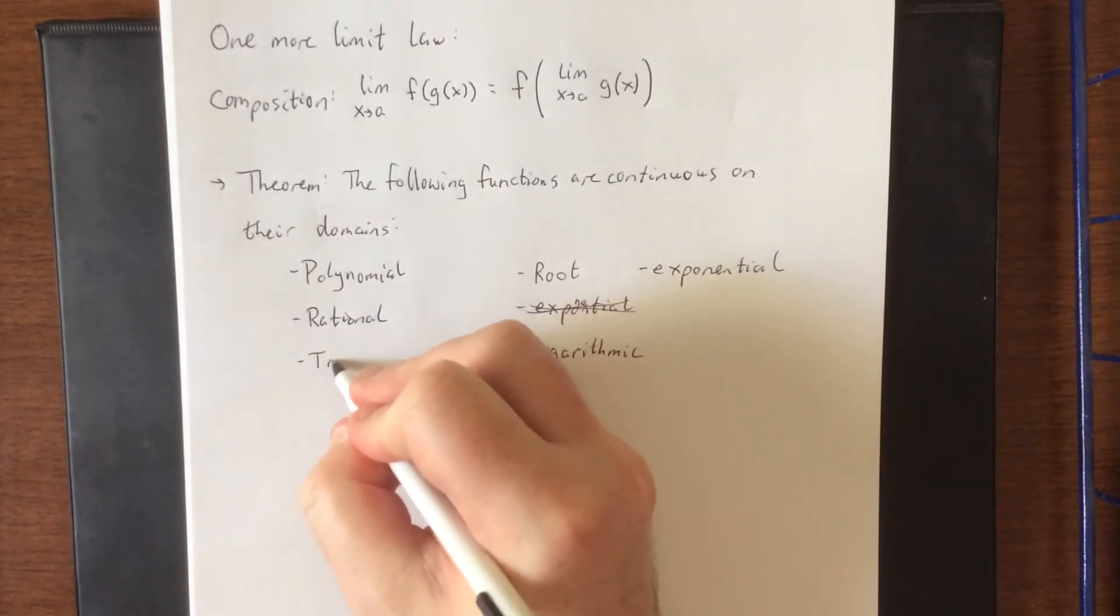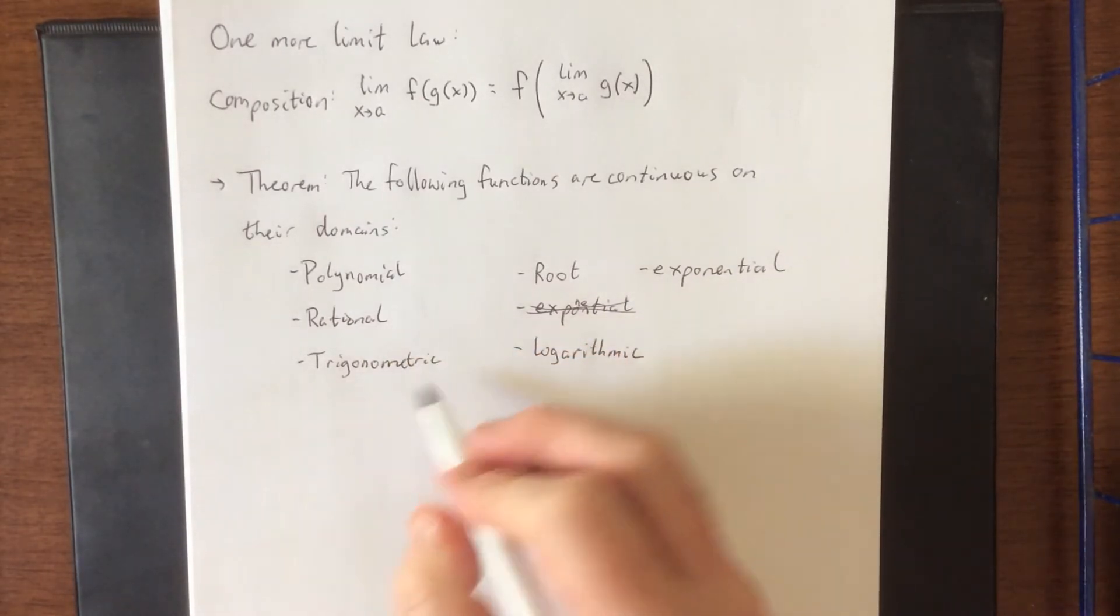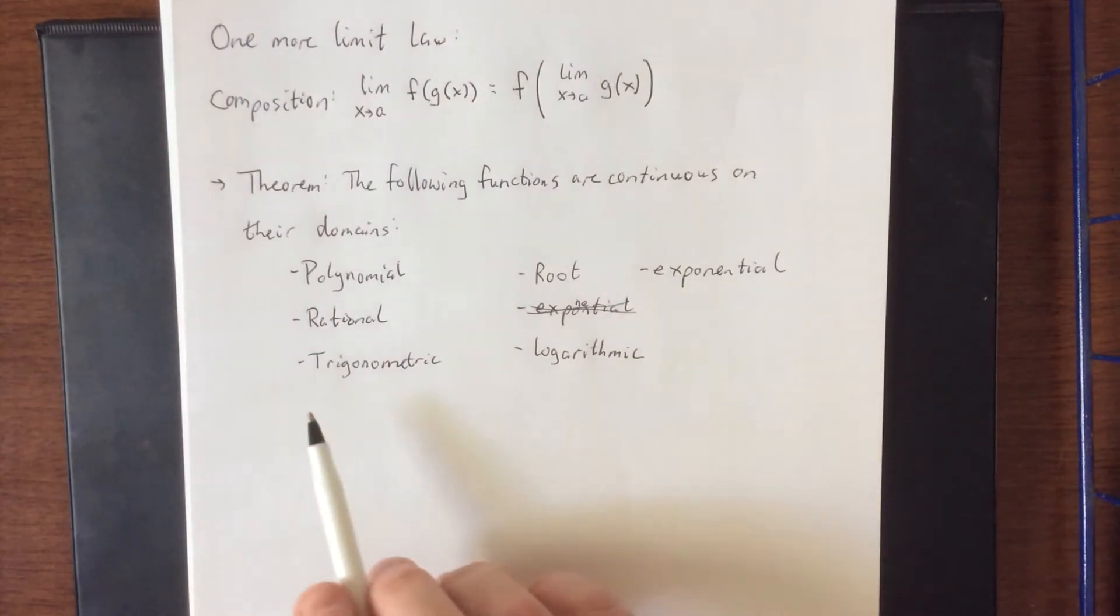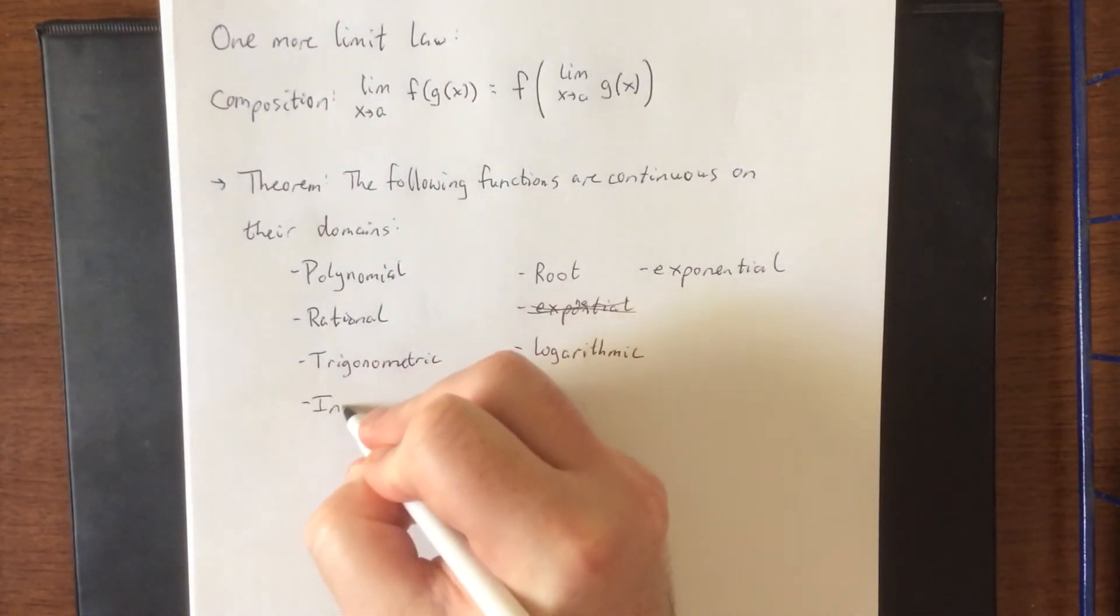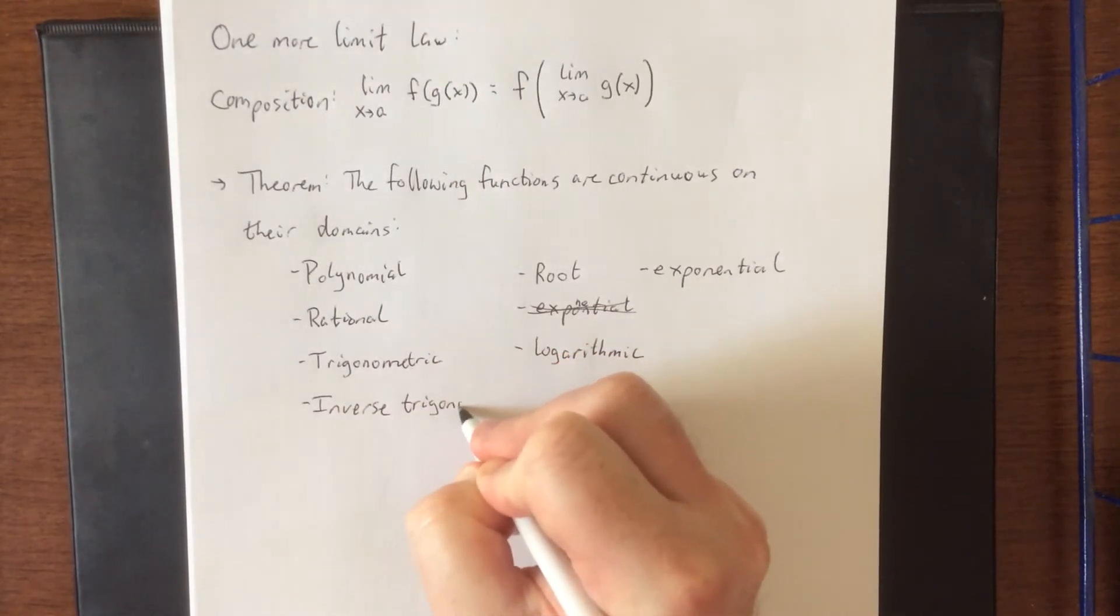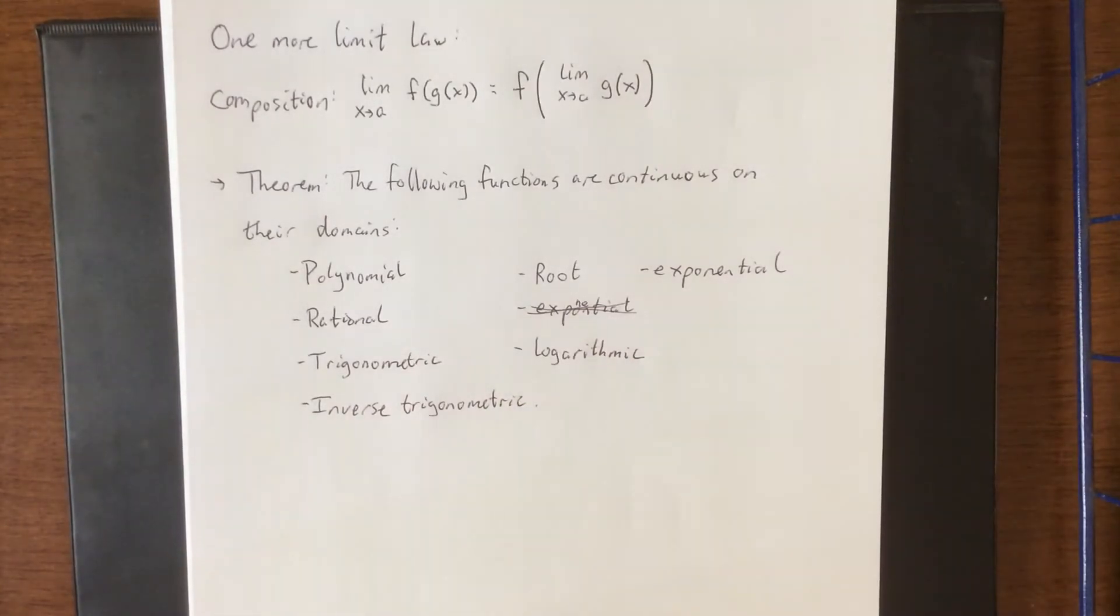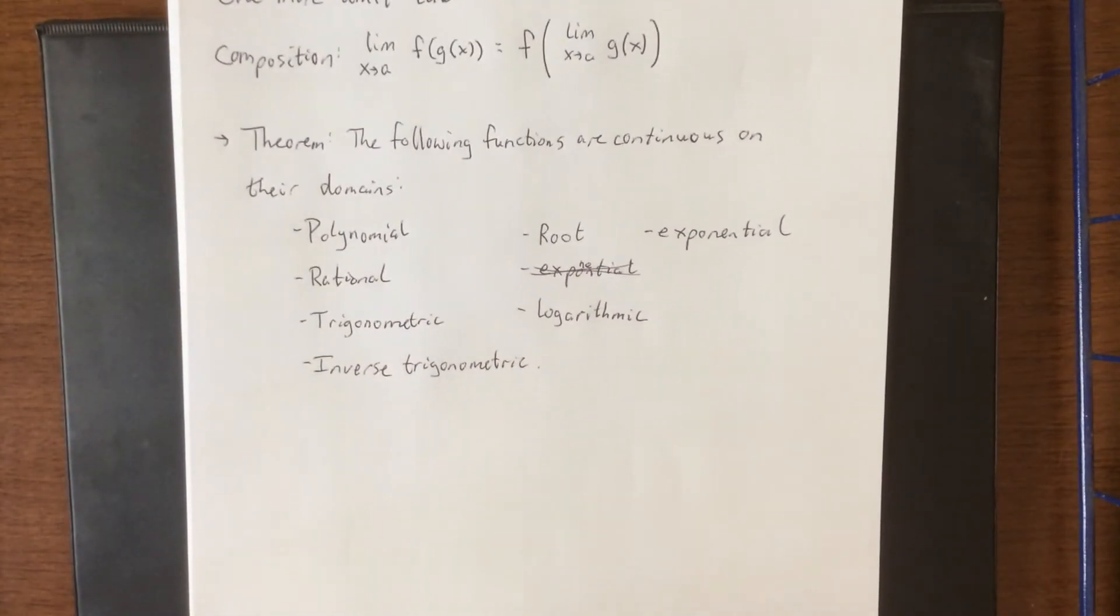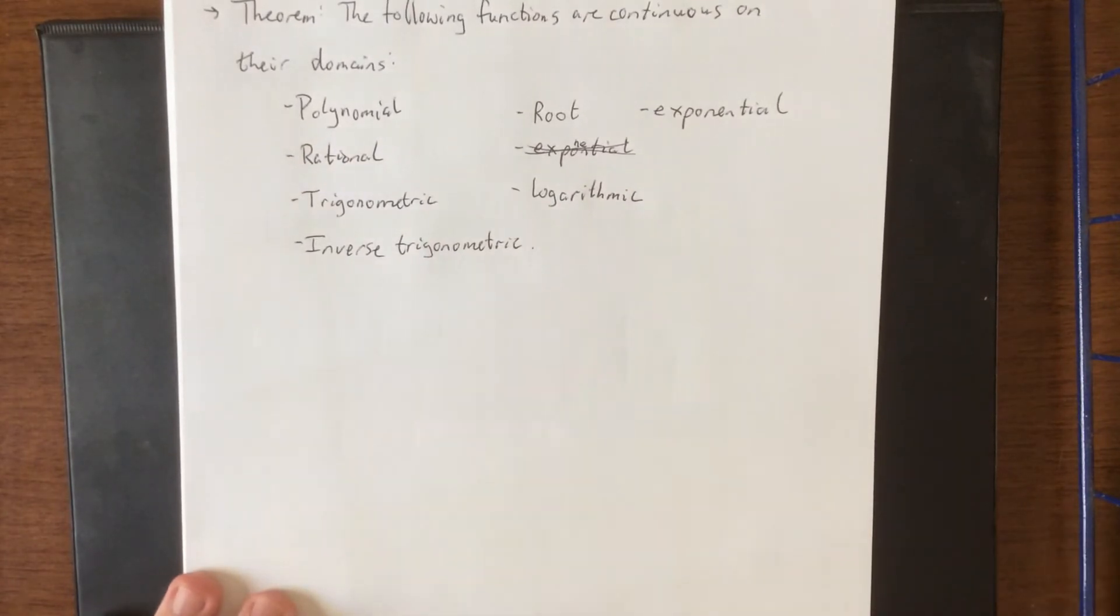We also have trigonometric. Sine and cosine have a domain of all real numbers, however, the other four have certain domain issues. And then we have our inverse trigonometric functions. Now what that means for us is that if you are capable of finding a domain, you are capable of finding the intervals on which a function is continuous.